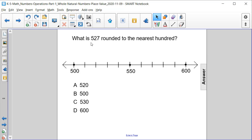Let's start by plotting the number 527 on the number line we have here. We have 500 as the lowest number on our number line and 600 as the highest number.